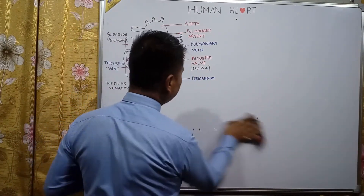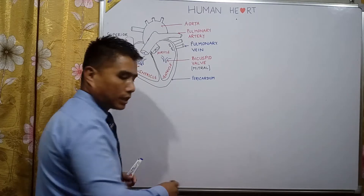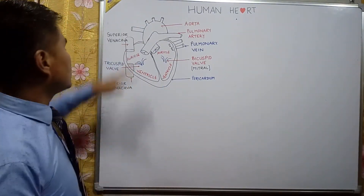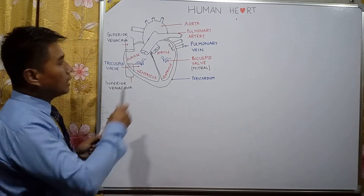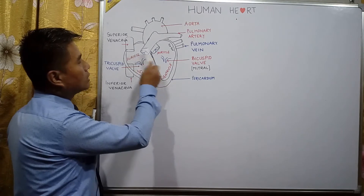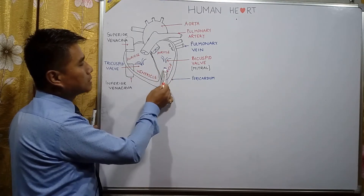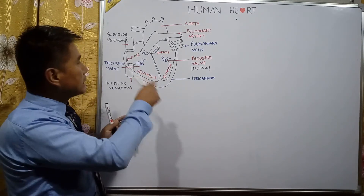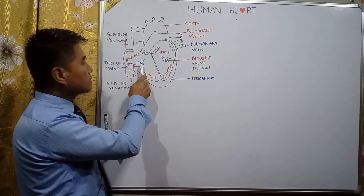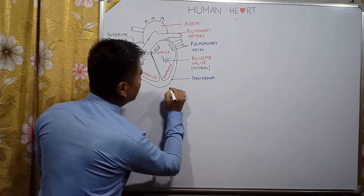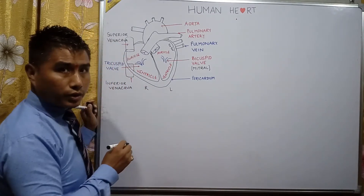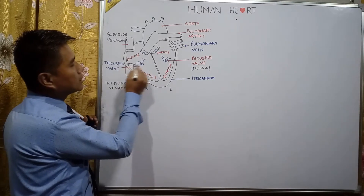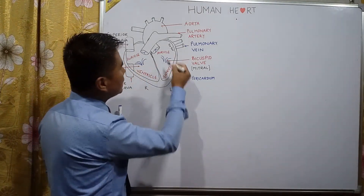Here I have drawn a simple diagram of the heart. The upper chambers are auricles and the lower chambers are ventricles. Between the right auricle and right ventricle there is a valve called the tricuspid valve, and between the left auricle and left ventricle there is a valve known as the bicuspid valve.